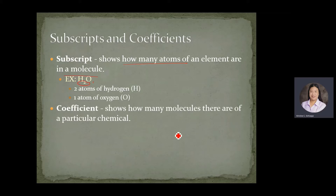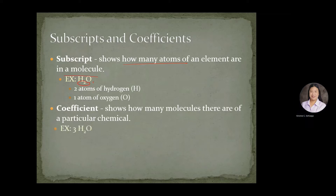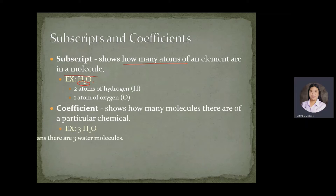When we say coefficient, this shows how many molecules there are of a particular chemical. For example, we have three molecules of water — the three here represents the number of water molecules.